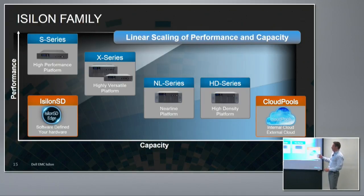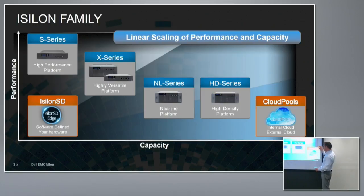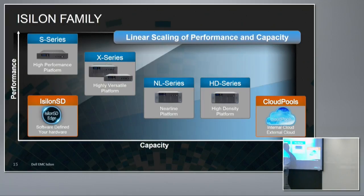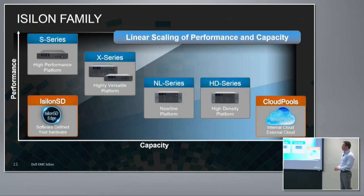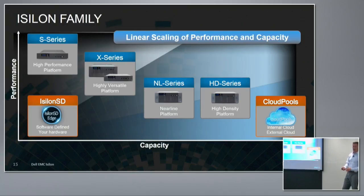Cloud Pools provides the economics of the cloud with very high capacity. SD Edge is a low-capacity, not very high-performance node for edge and ROBO locations — used to aggregate data back to the core, not for high-performance compute. This is our node family today, and it will evolve as we continue to add new node types and refresh existing ones.